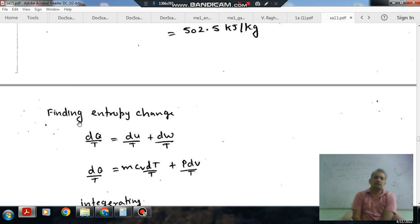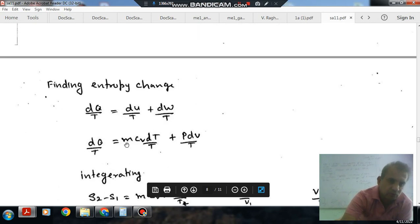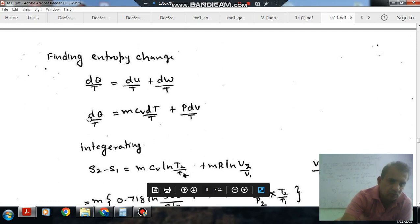Using the first law, DQ by T equals DU plus PDV, all divided by temperature. So DQ by T equals MCPDT plus PDV over T. For integrating, we have S2 minus S1 equals MCP ln(T2 by T1) plus MR ln(V2 by V1).